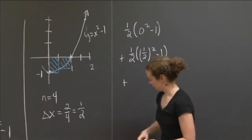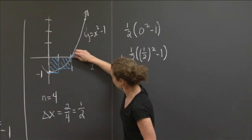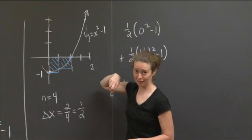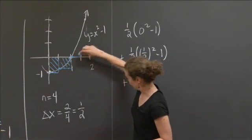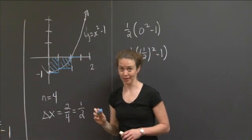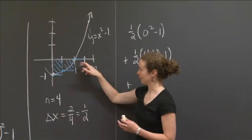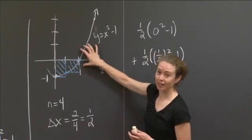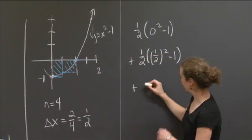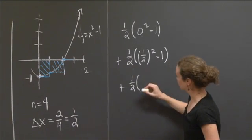The next one is going to be this interval. Well, there's no rectangle to draw, because it's just the output is 0 at the left endpoint there. So it's going to have output equal to 0 at length 1 half, and height 0. But we'll write it out anyway. It's going to be 1 half times the quantity.